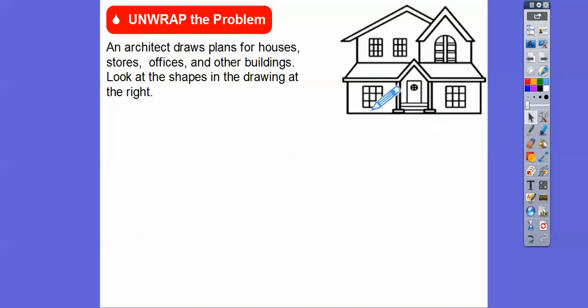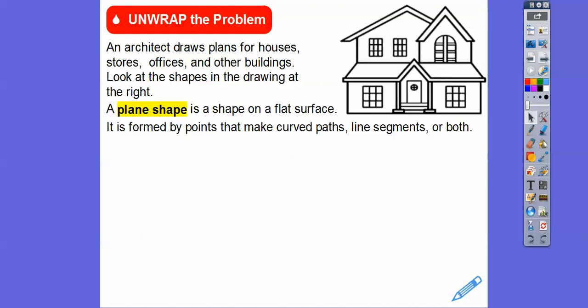I see a big square and a bunch of small squares. These steps kind of look like rectangles — here's a rectangle. We'll talk more about that later. A plane shape is a shape on a flat surface. It's formed by points that make up several paths — curve paths, line segments, lines, things called rays, and polygons.